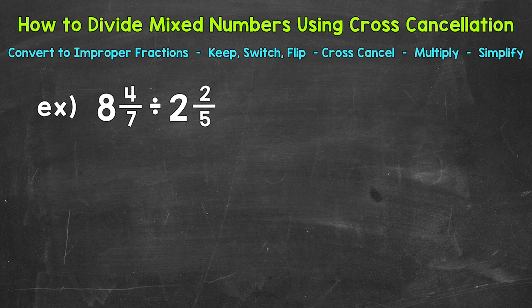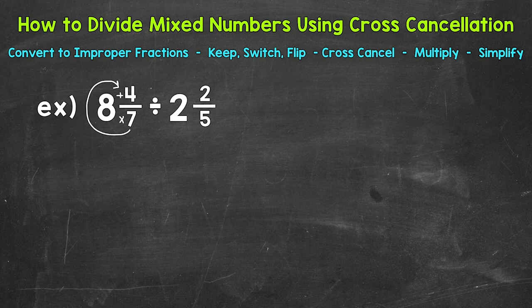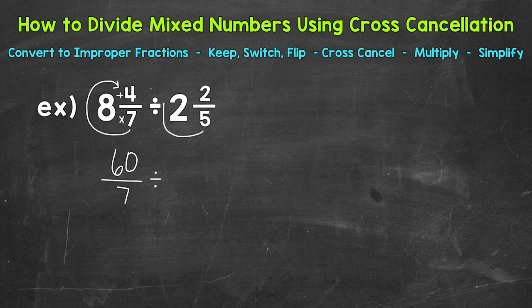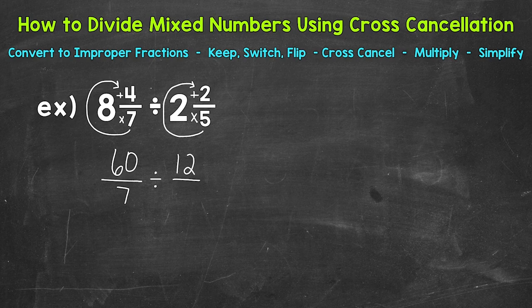We'll start with 8 and 4 sevenths. Start at the bottom and work our way to the top — we multiply then add. Denominator times the whole number: 7 times 8 is 56, plus our numerator of 4. So 56 plus 4 gives us 60. We keep our denominator of 7 the same. Then for the second mixed number: 5 times 2 is 10, plus 2 is 12. So we get 12 fifths.